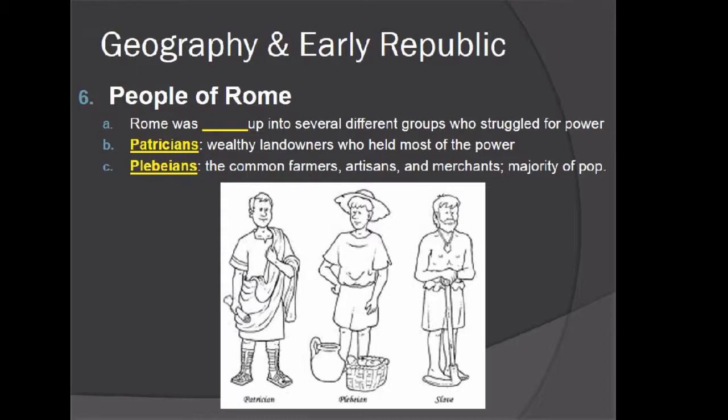Rome was divided into several groups who struggled for power. The two main groups were the Patricians — wealthy landowners who held most of the power — and the Plebeians, who were common farmers, artisans, and merchants, and also the majority of the population. A third group were slaves, who were not considered citizens, had no voting rights, and essentially had no power at all. You were typically born into slavery, or sometimes when Rome conquered a territory, captured soldiers might become slaves, though that was relatively rare. Usually when Rome conquered a city, its people simply became part of the Roman Empire.